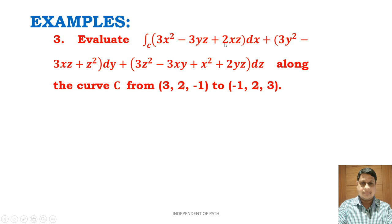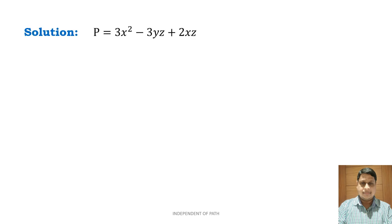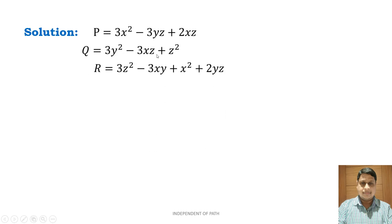Next example: evaluate ∫_C (3x² − 3yz + 2xz) dx + (3y² − 3xz + z²) dy + (3z² − 3xy + x² + 2yz) dz along the curve C from (3, 2, −1) to (−1, 2, 3). In solution: P = 3x² − 3yz + 2xz, Q = 3y² − 3xz + z², R = 3z² − 3xy + x² + 2yz.